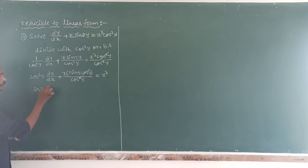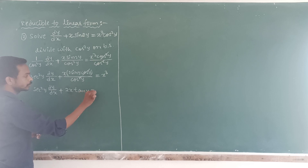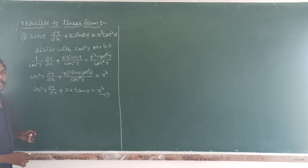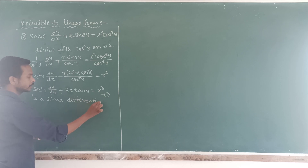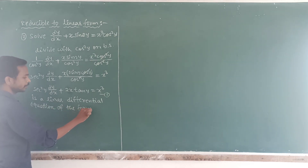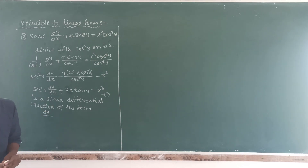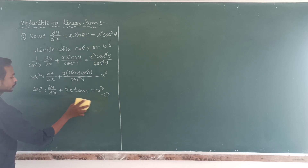Now it is in the form of a linear differential equation — of the form dy/dx + P·y = Q. However, checking again, it is still not in linear form because the coefficient of dy/dx should be one. Sorry — we still need to take a substitution.